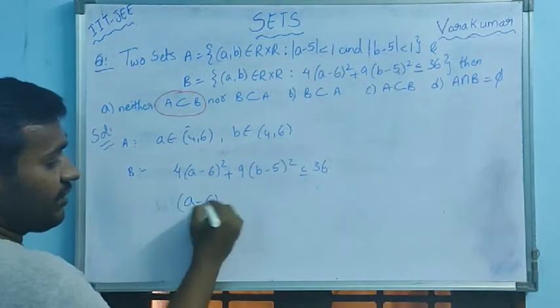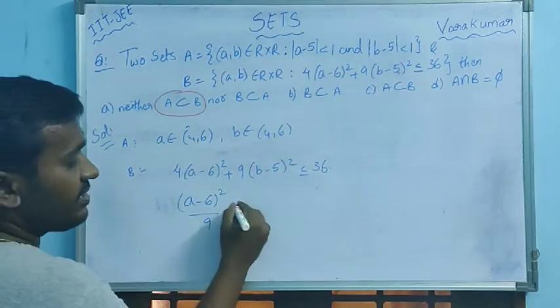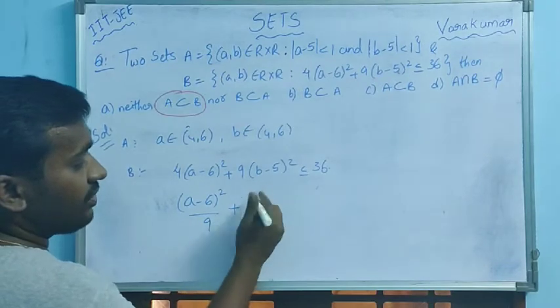By 4, that is 9, cancel. Plus (b-5)² by 4 less than or equal to 1.